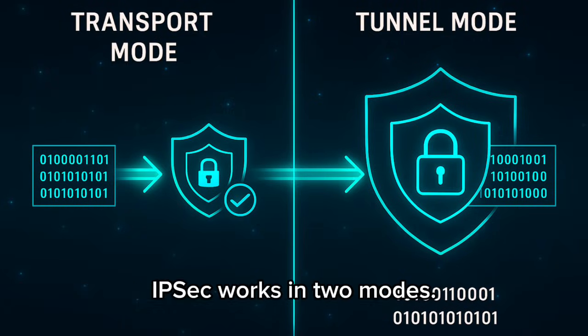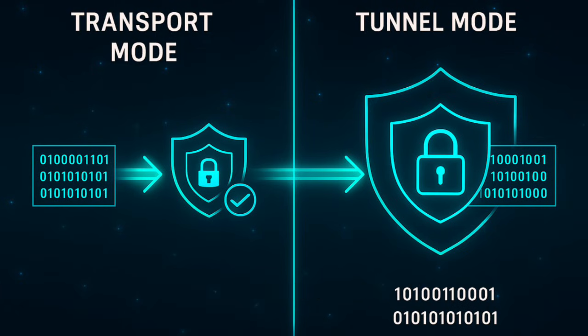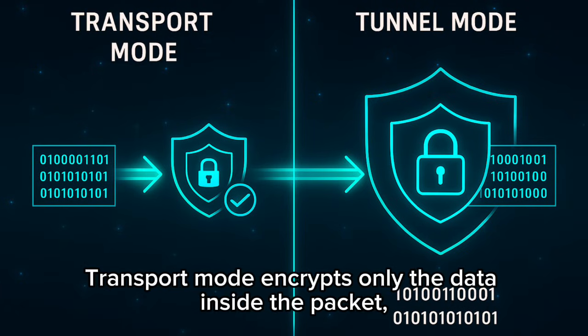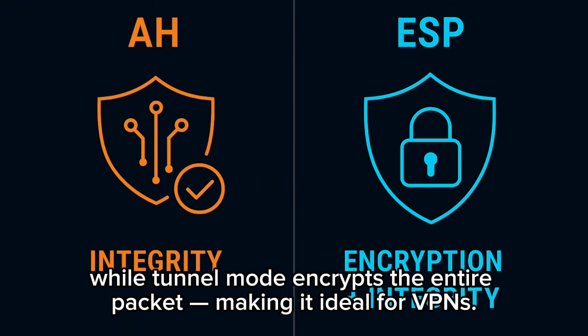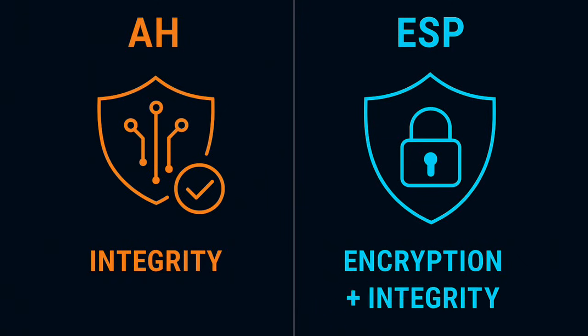IPsec works in two modes. Transport mode encrypts only the data inside the packet, while tunnel mode encrypts the entire packet, making it ideal for VPNs.